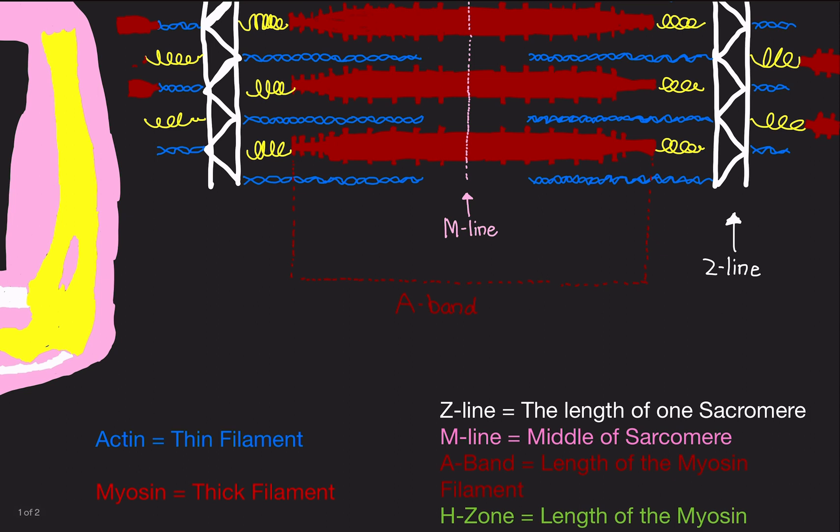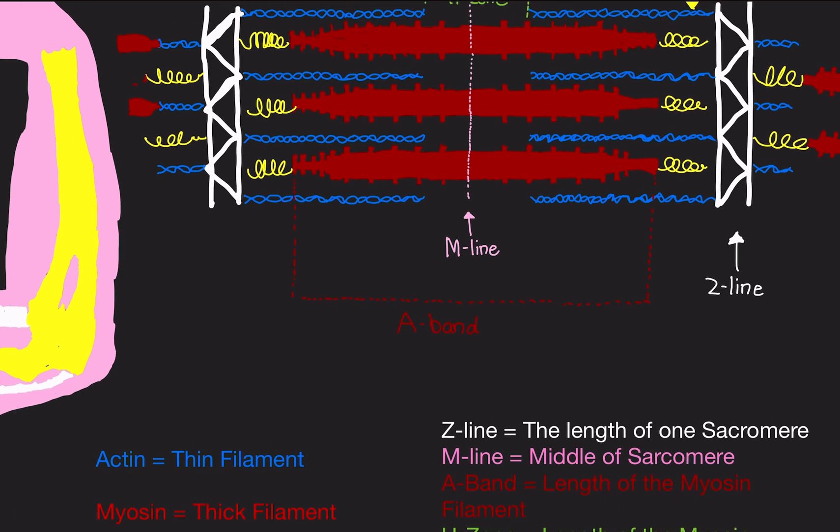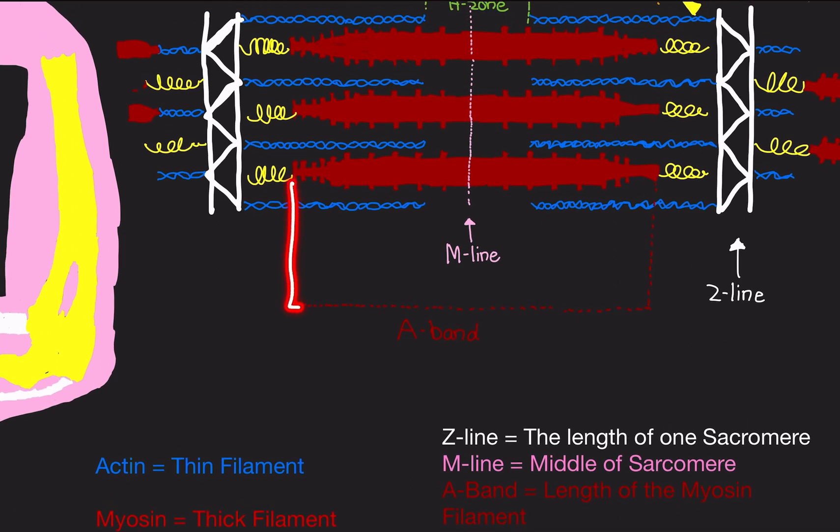The A-band is the length of the myosin filament. So this A-band here is the length of myosin. I don't know why it's called A-band, to be honest. I have no idea. Maybe because M-line was already taken, so they couldn't call it like a myosin band or something like that, because that would confuse you with M-line. But it's called A-band. It's the length of the myosin filament.